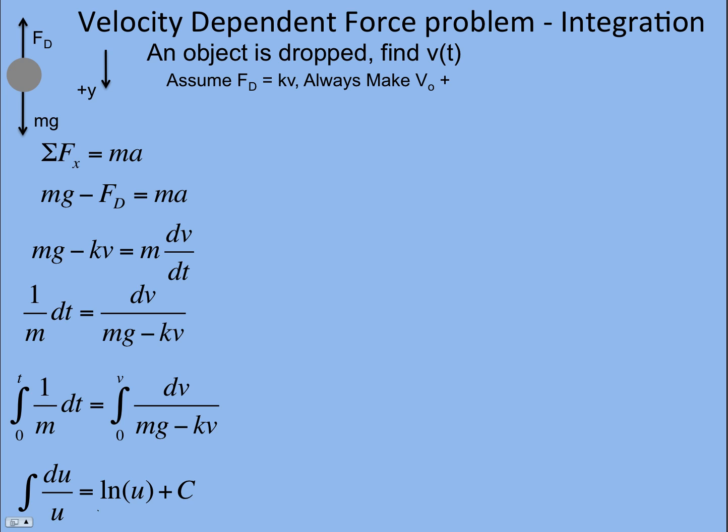And so u would be mg minus kv, and so that would mean du is negative kdv. And so since there's no negative k here, there is a dv, I've got to put the negative k out in front.